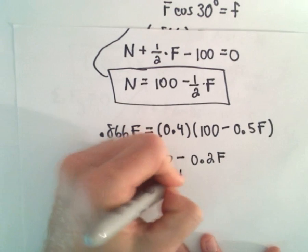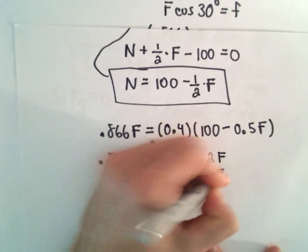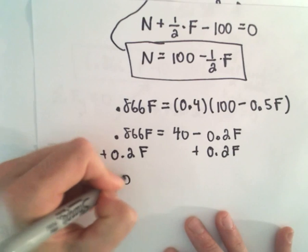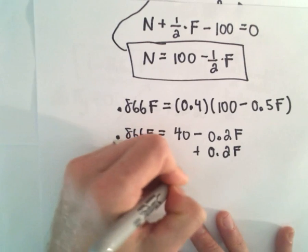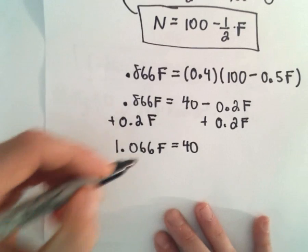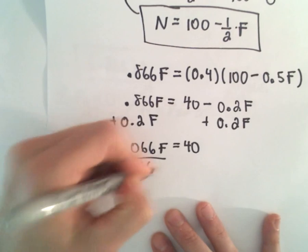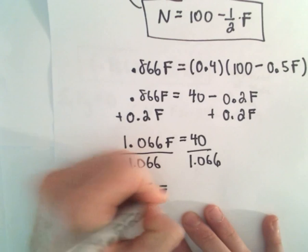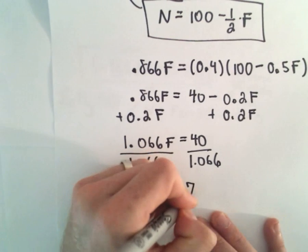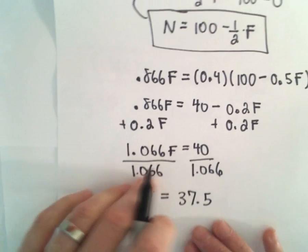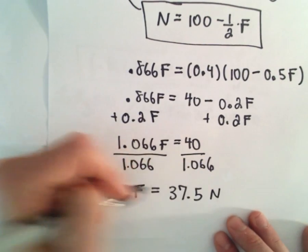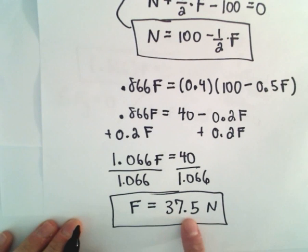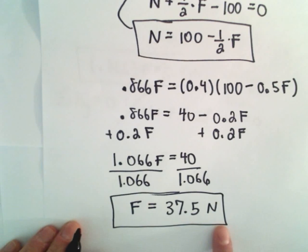If we add over, so if we add 0.2 F to both sides, that's going to give us 1.066 F equals 40. And if we divide both sides by 1.066, 1.066, that's going to give us our solution. It says we're going to need a force of, I got 37.5. And, you know, the weight of the box was in newtons, so our force will also be in newtons. So it says it's going to take a force of right at 37.5 newtons to get that box moving.